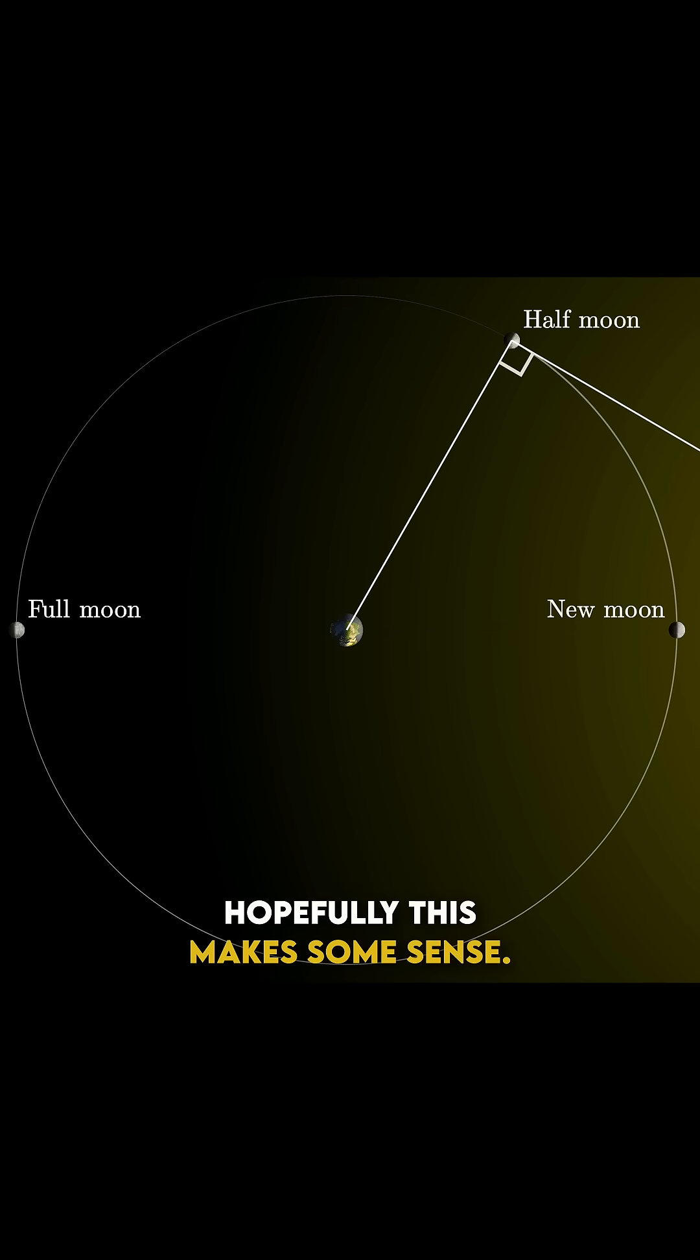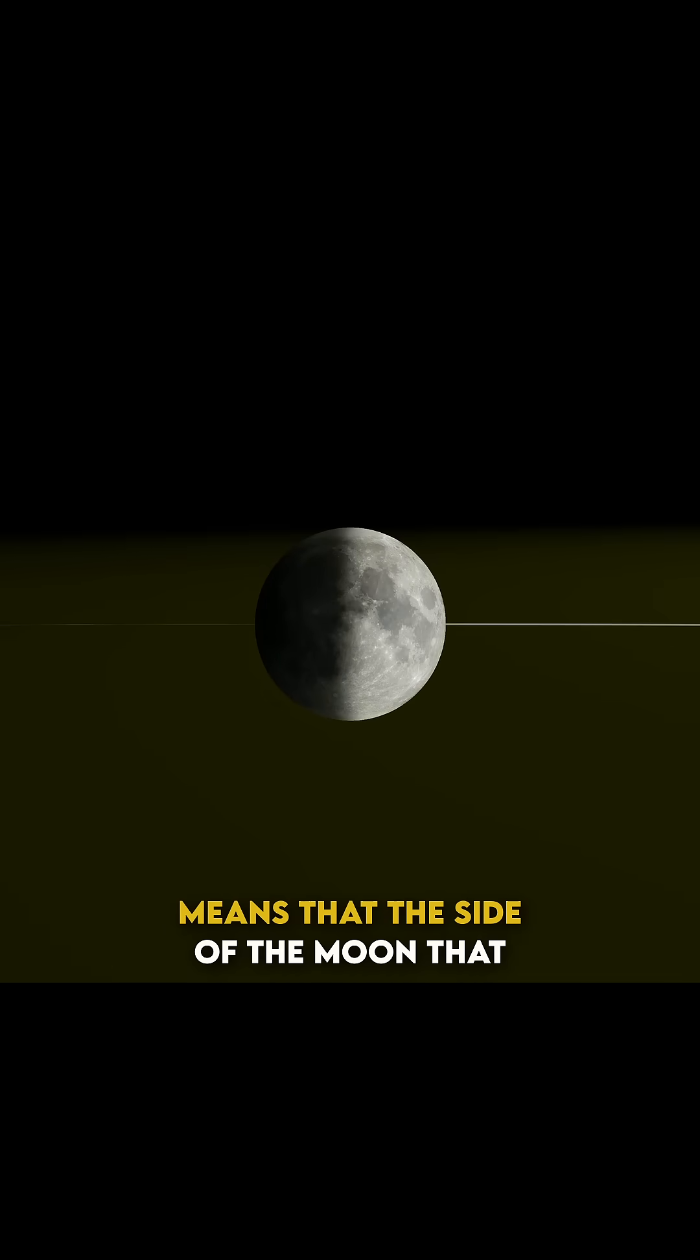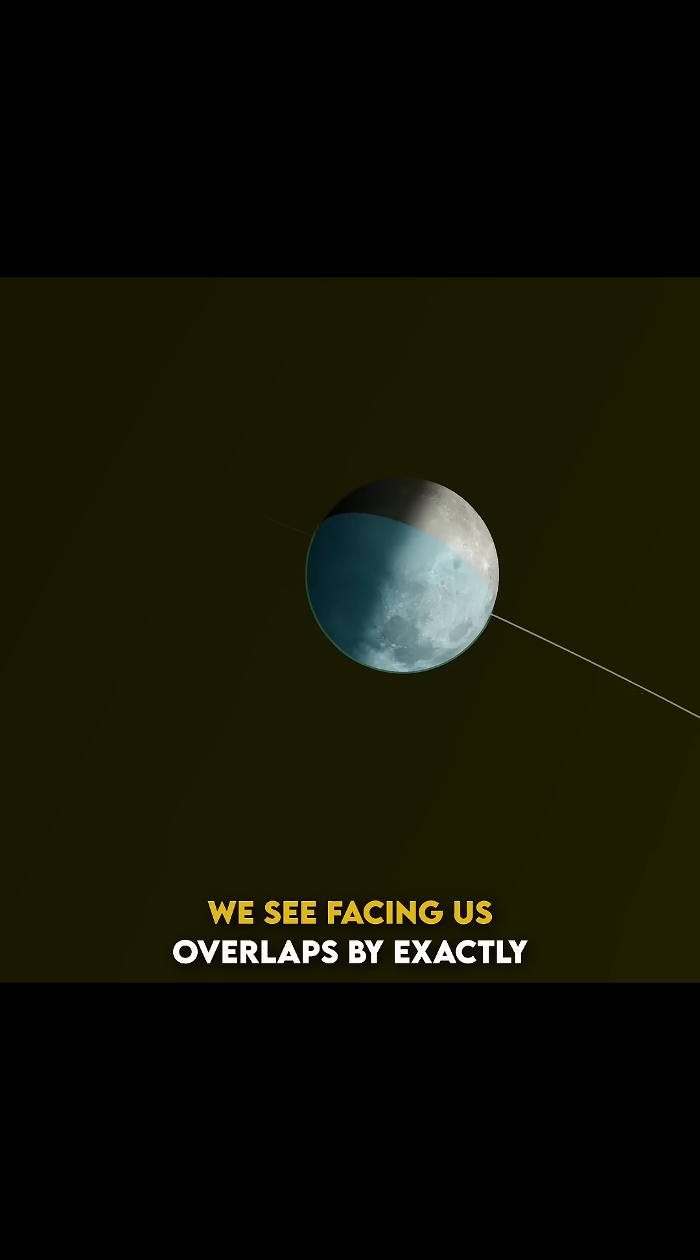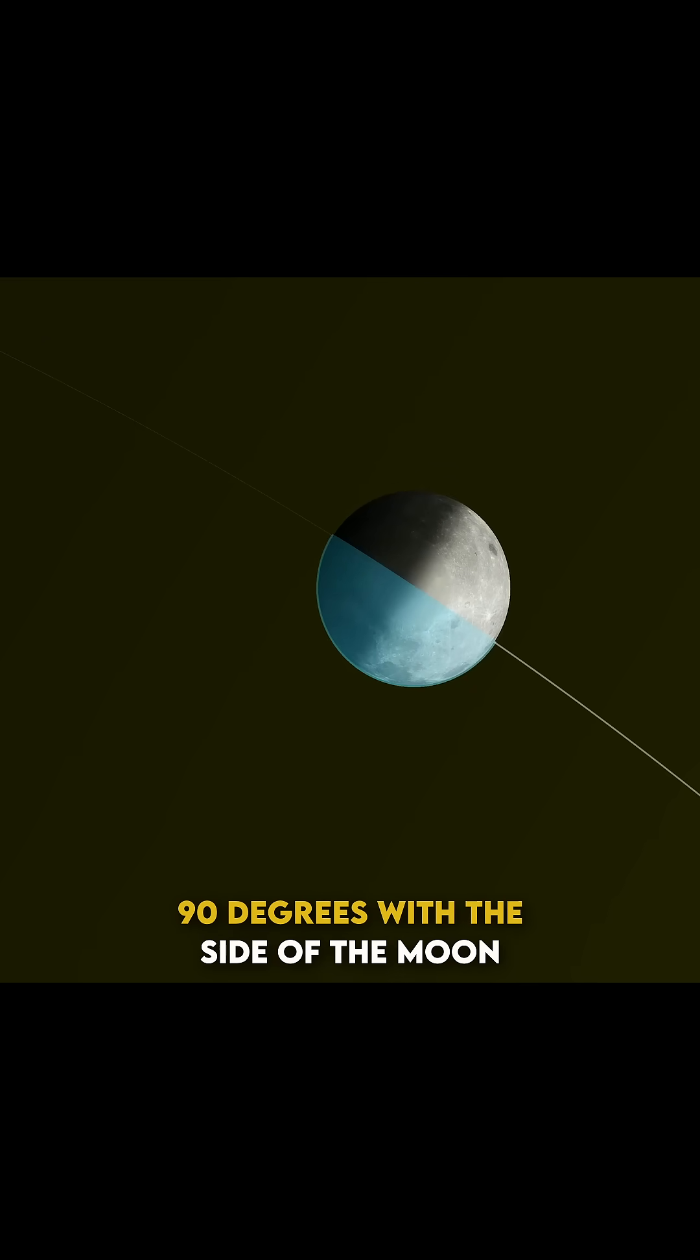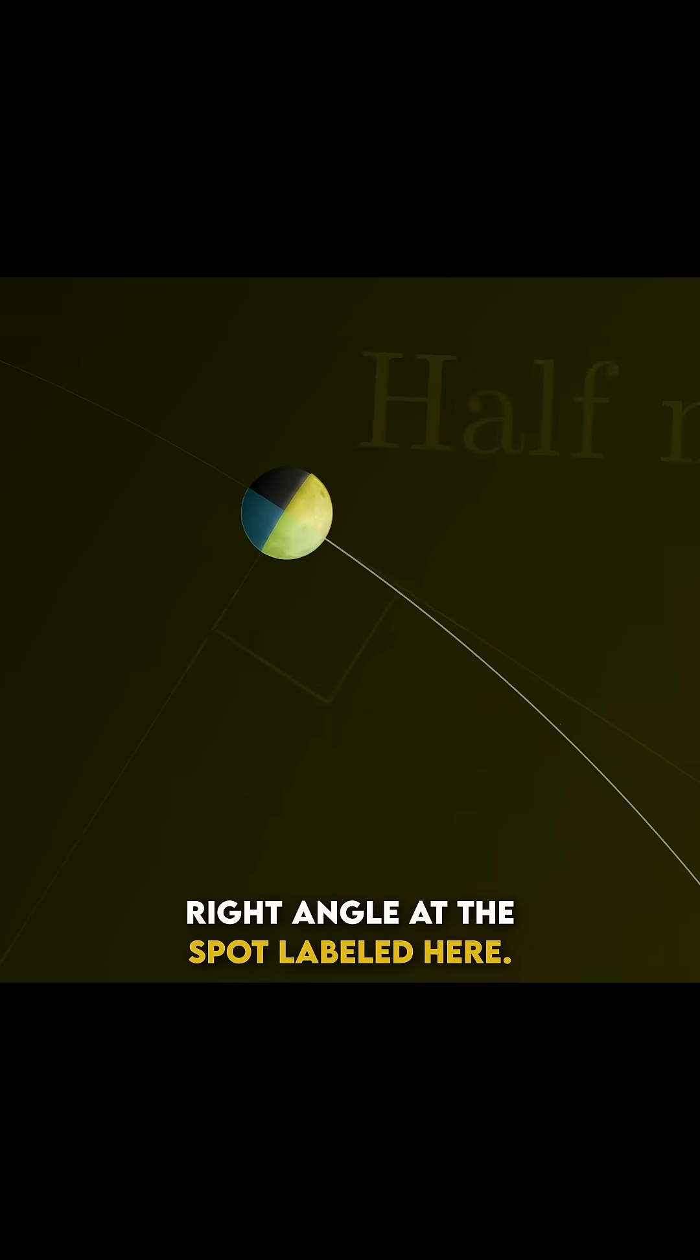Hopefully this makes some sense. For us to see a half moon, it means that the side of the moon that we see facing us overlaps by exactly 90 degrees with the side of the moon being illuminated by the sun, which in turn means we have a right angle at the spot labeled here.